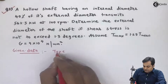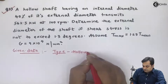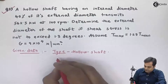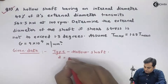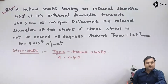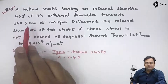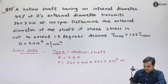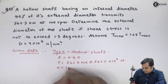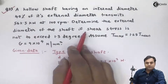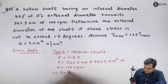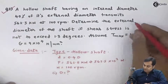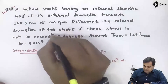The type of shaft is hollow. The internal diameter is equal to 0.4 times the external diameter — the relation is given. Power transmitted is 562.5 kilowatts, that is 562.5 × 10³ watts, at 100 rpm. We have to find the external diameter. Shear stress is given as 60 newton per mm².